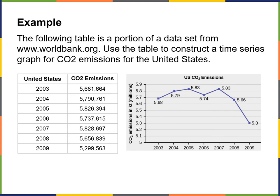Here's an example using part of the data set from the World Bank. The time series graph shows CO2 emissions in the United States from 2003 to 2009. You can see a trend up and then a trend down. That downturn from 2008 to 2009 was primarily because of lower economic activity — we're not running as many cars and producing as many things, so not as much emissions.